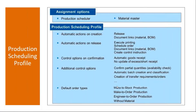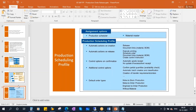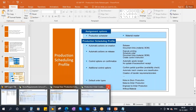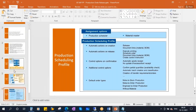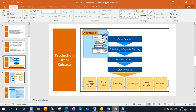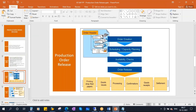To summarize: in the production scheduling profile, under automatic actions on creation, you activate the release checkbox. This profile is then assigned to the material master in the work scheduling view. Once that is done, every time you create a production order for that material, it will automatically be released. Once you release a production order, the subsequent activities will take place. That's all about production order release. Thank you.